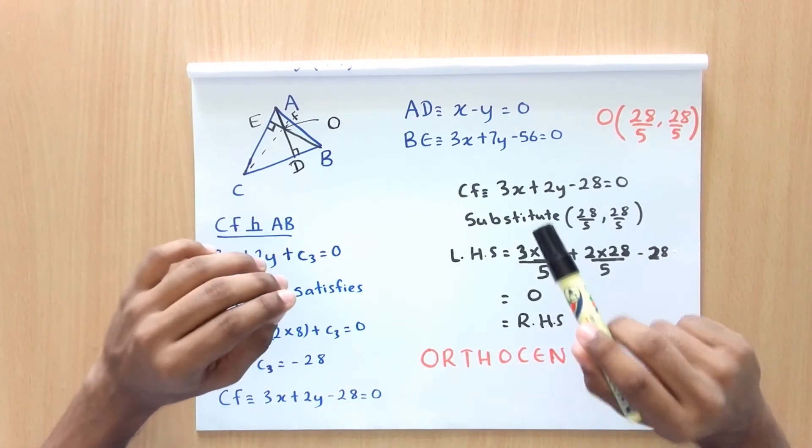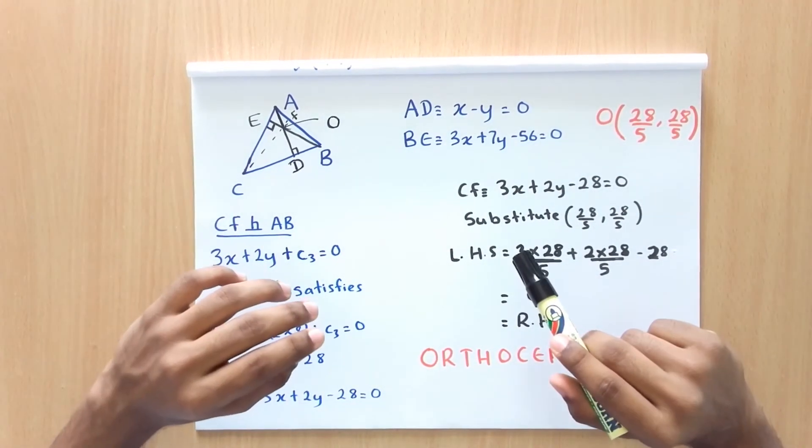This point of concurrency of altitudes is called the orthocenter.